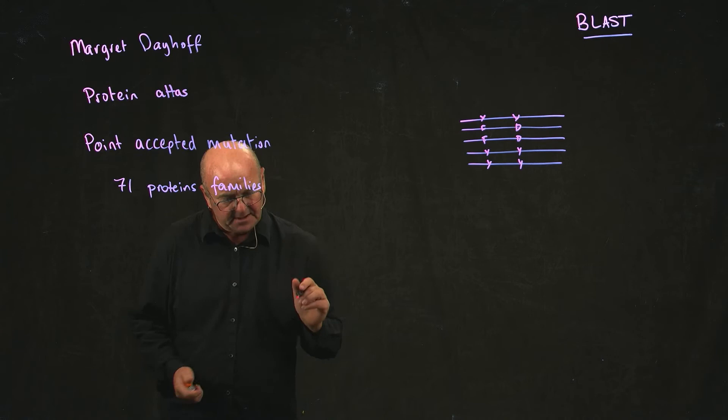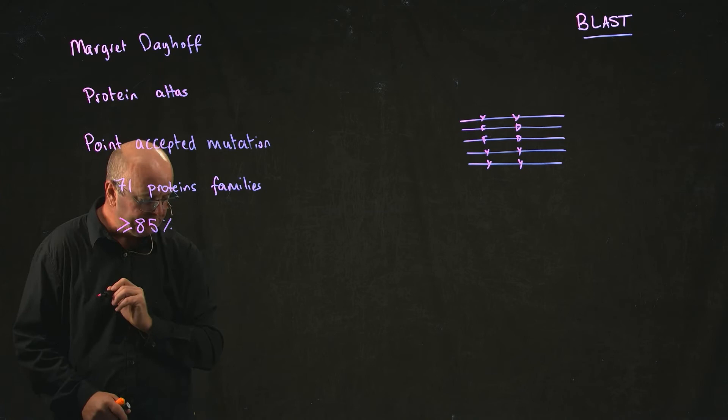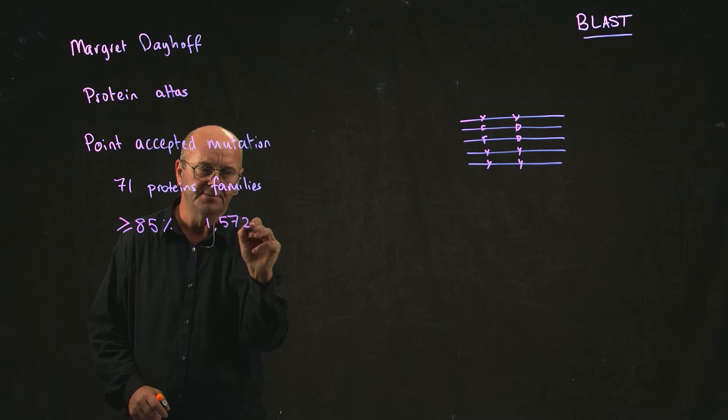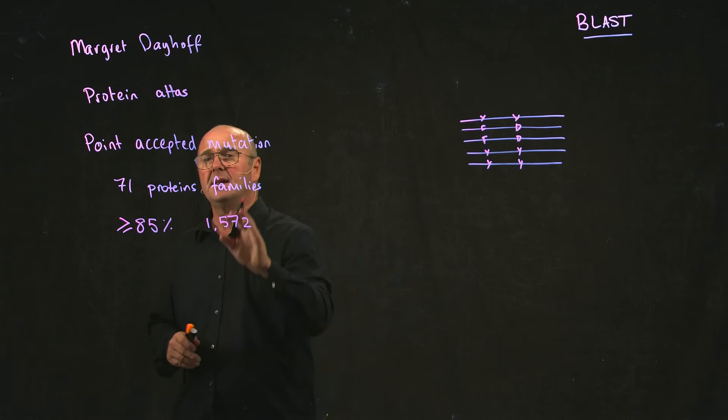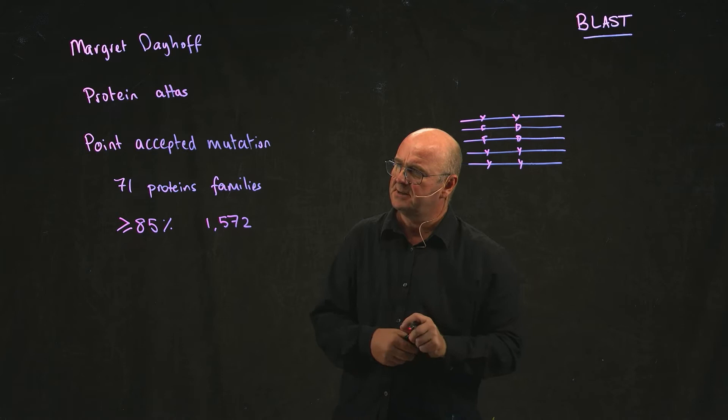Dr. Dayhoff took proteins that were greater than or equal to 85% similar, and she looked at 1,572 changes among those proteins. She said, at each point, this is the frequency with which a mutation is accepted, and hence it became the point accepted mutation.